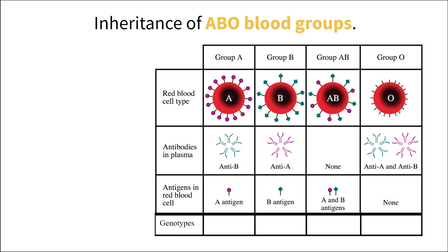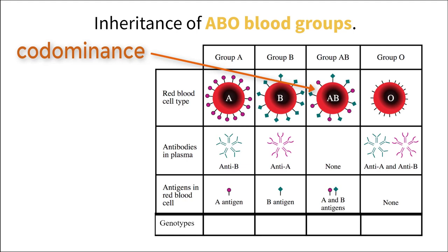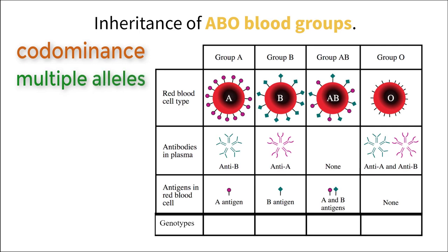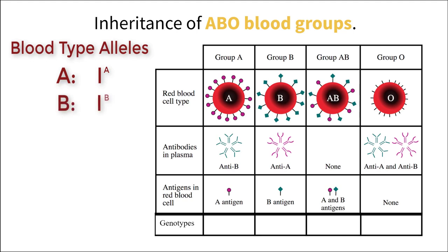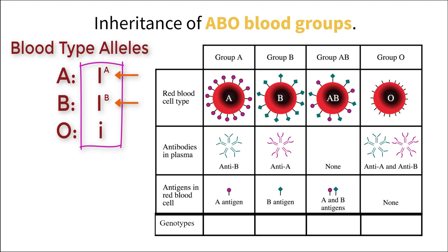Blood typing in humans can be explained by a few simple rules of inheritance. Codominance applies to blood groups just as it did to chicken feather coloring, but we also have a scenario with blood typing where there are multiple — more than two — alleles expressed. There are three total alleles: a dominant A allele noted as capital I superscript capital A, a dominant B allele noted as capital I superscript capital B, and a recessive allele noted as lowercase i. This demonstrates both multiple alleles and codominance because we have two dominant alleles.